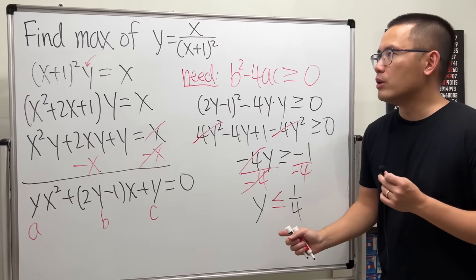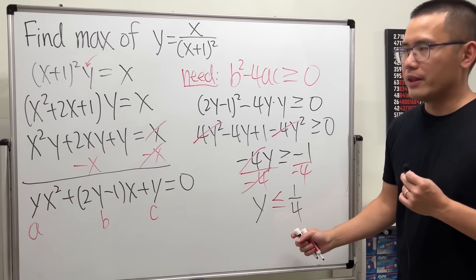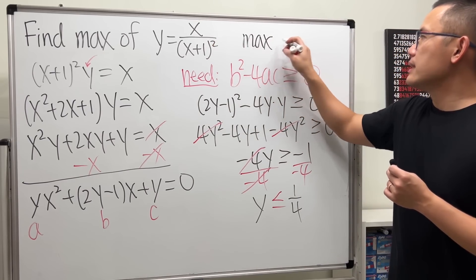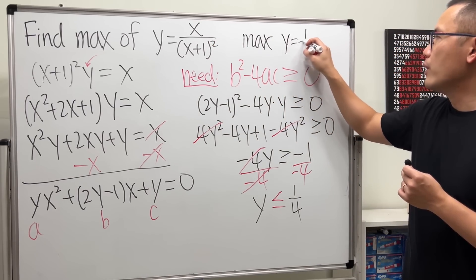In another word, we can see that the maximum value for y is 1 over 4. So, the answer is, max is at y is equal to 1 over 4.